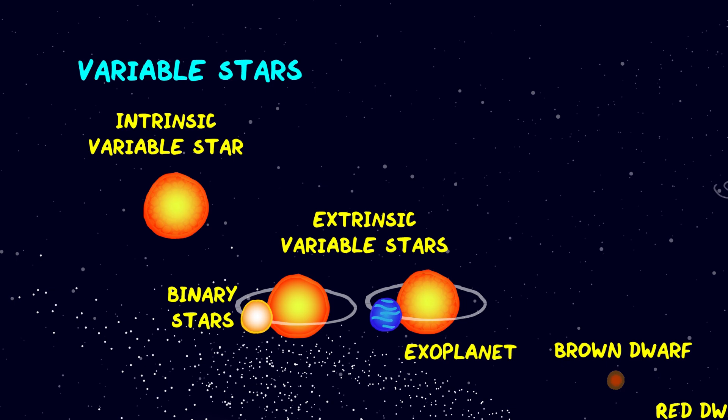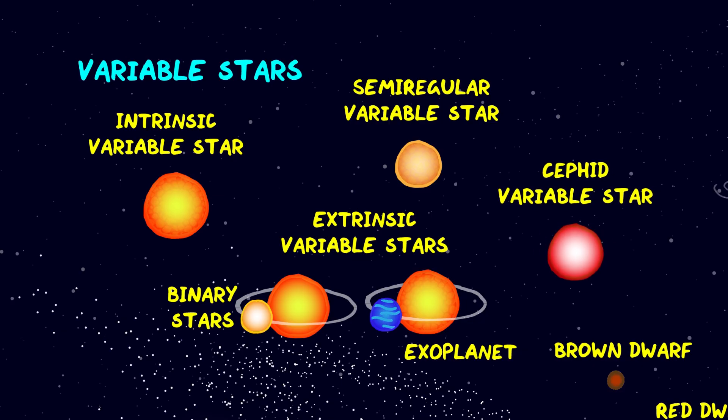And some giant or supergiant stars have irregular changes in luminosity. Cepheid variable stars are very valuable to us because they've got large variations in both size and temperature with a very stable frequency. Because of this strong relationship between luminosity and the frequency they pulsate, they're used to determine accurate distances in the universe. They're known as standard candles.